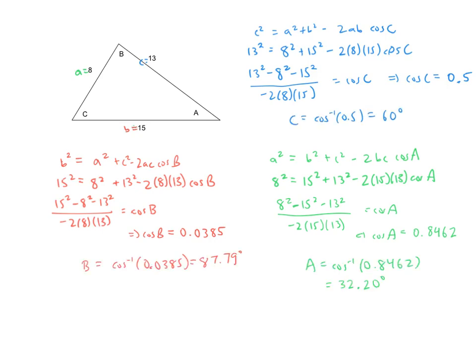Notice that my three angles — 60 degrees, 87.79 degrees, and 32.20 degrees — add up to almost exactly 180 degrees; it's just a tiny bit off due to round-off error. In fact, I could have saved myself some work by just finding the measure of angle C and angle B, for example, and then subtracting their sum from 180 degrees to get angle A.